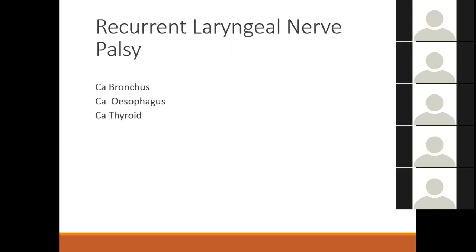Most benign thyroid nodules do not present with hoarseness or recurrent laryngeal nerve palsy. However, if you see a thyroid nodule with vocal cord palsy, it is 99.99% likely to be malignant thyroid — though most malignant thyroid nodules do not present with vocal cord palsy. Trauma — both accidental neck trauma such as bullet injuries and iatrogenic trauma — can cause vocal cord palsy.